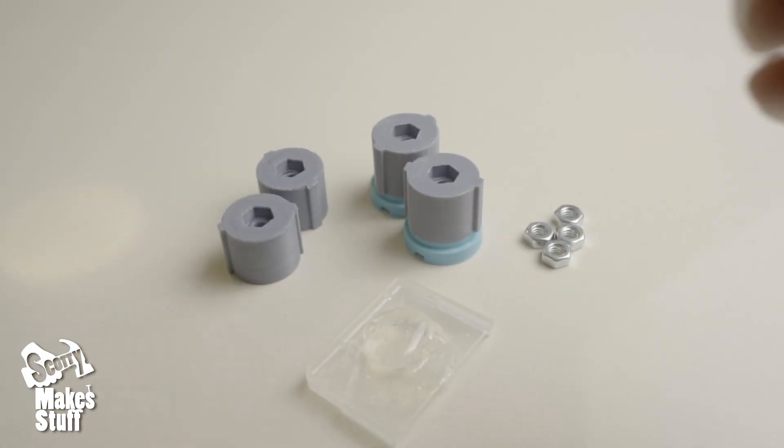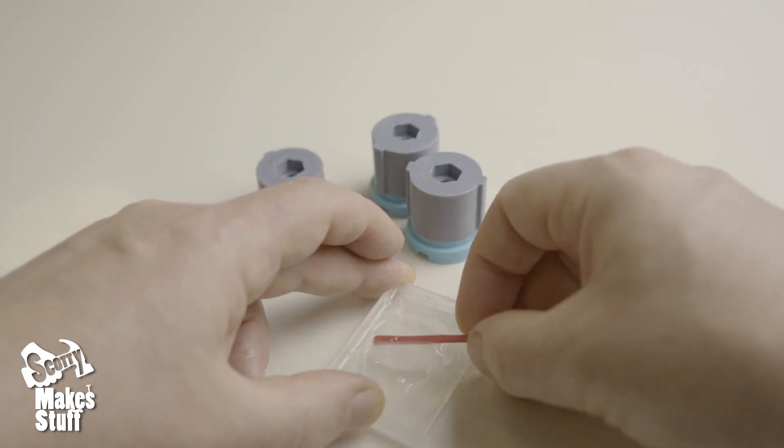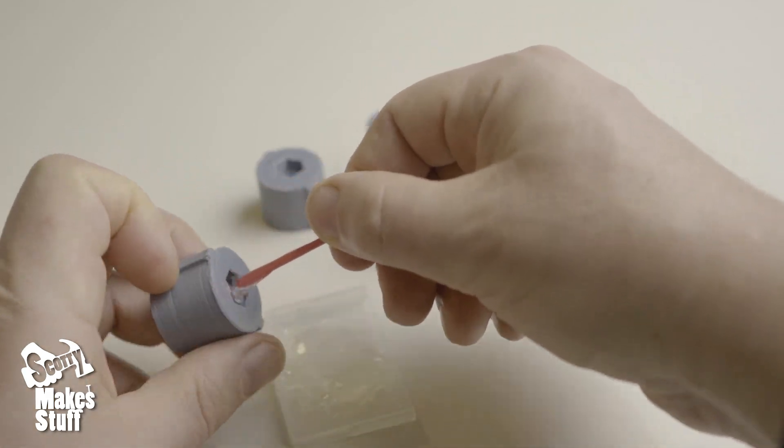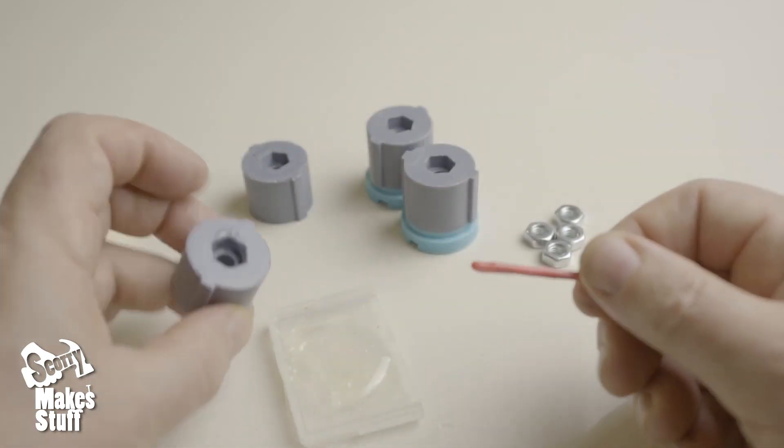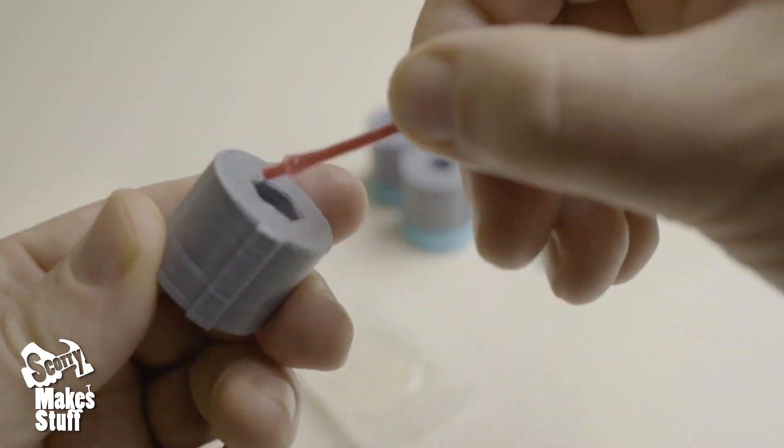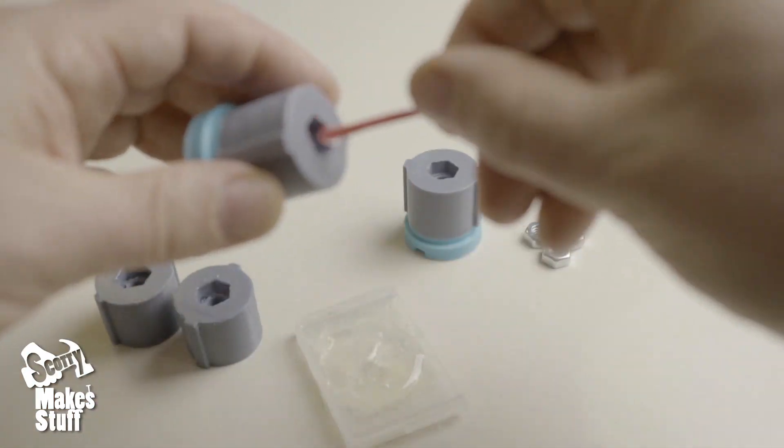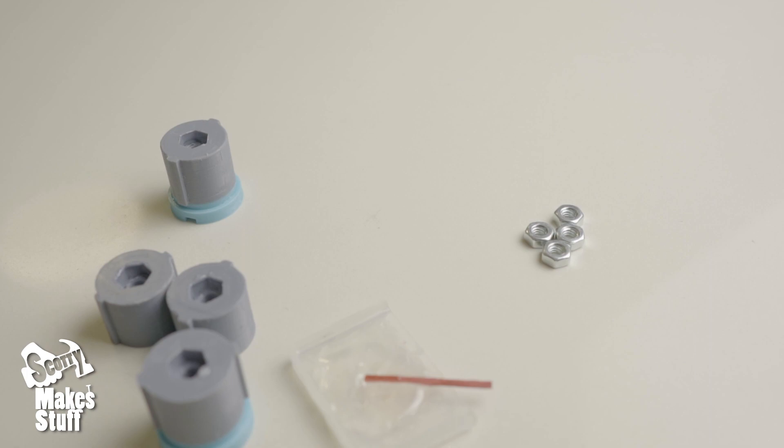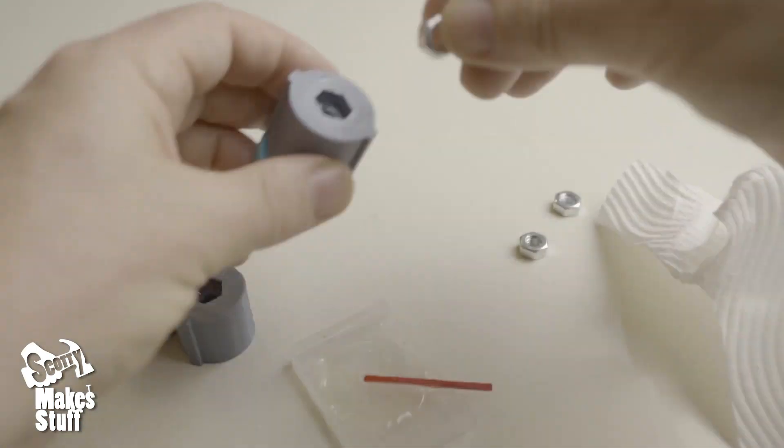Now we'll glue in the nut into the dynamic side of the fluid dampener. Once set, we'll fill the grease into the fluid dampeners.